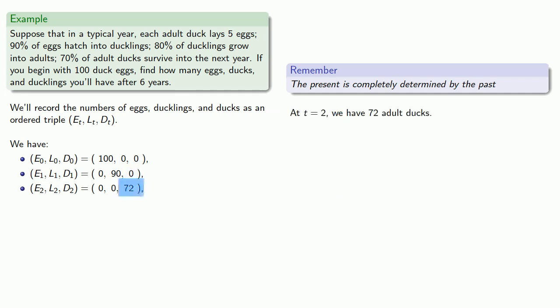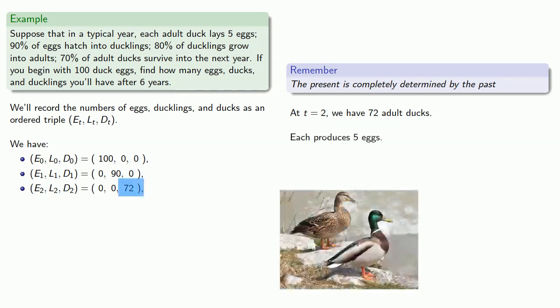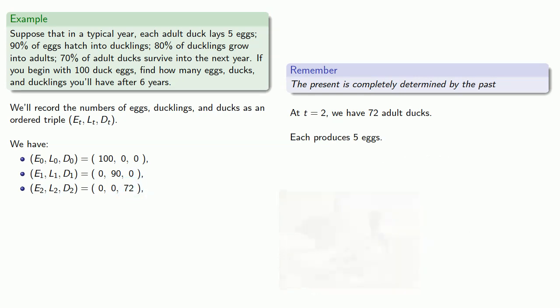At t equals two, we have 72 adult ducks and each produces five eggs. Yes, we'll ignore the finer points of biology. So at t equals three, we'll have 72 times five, 360 eggs.